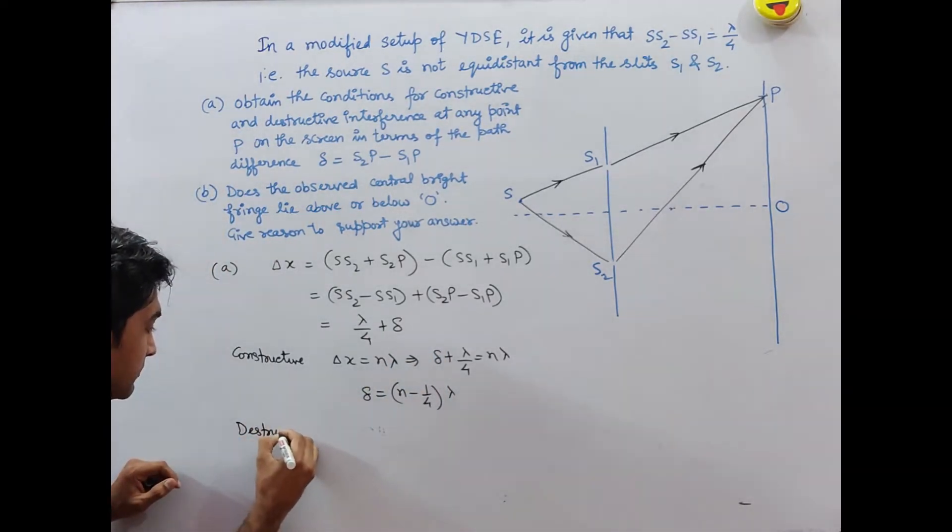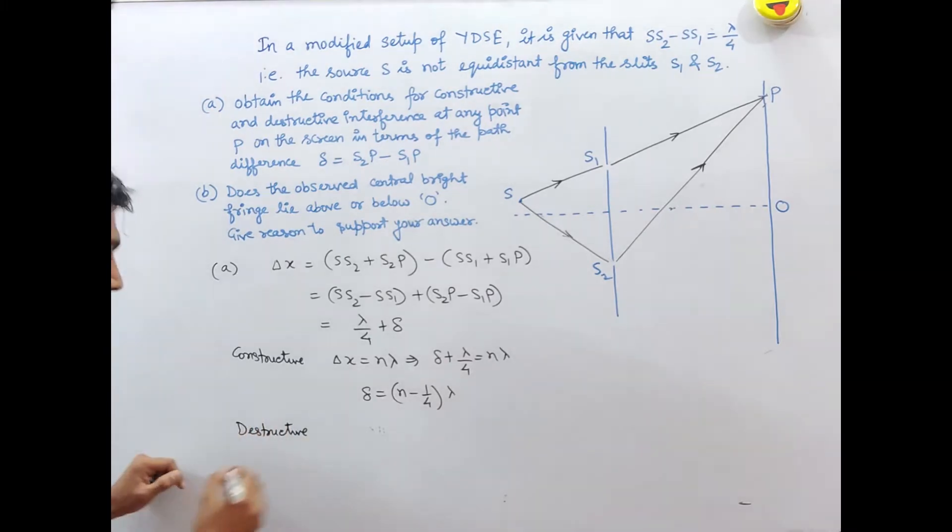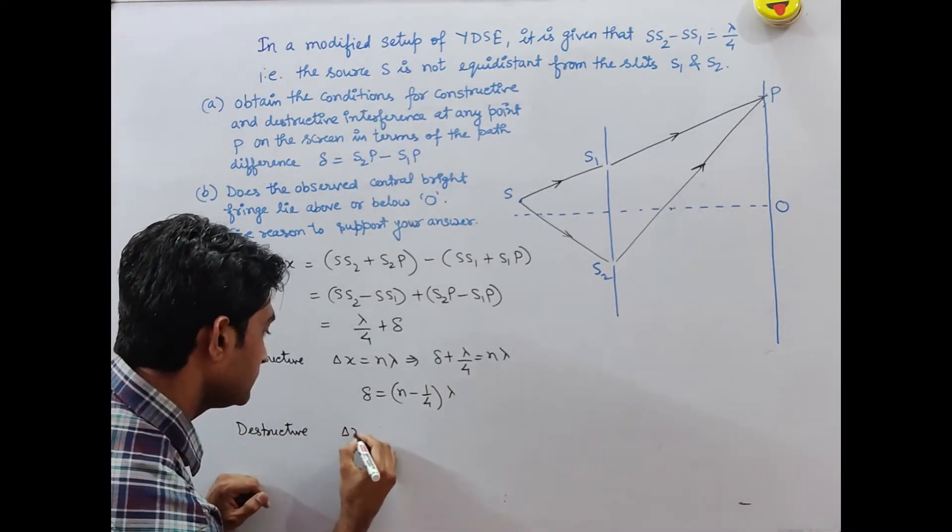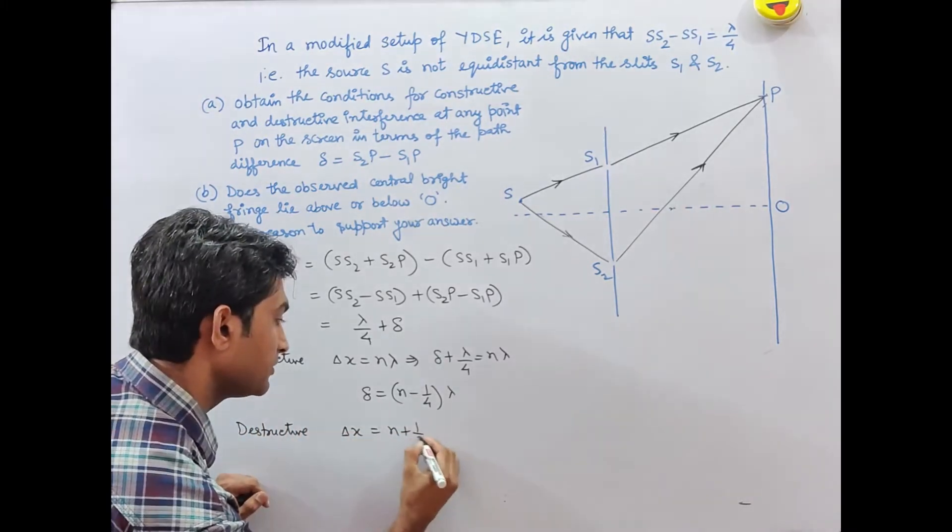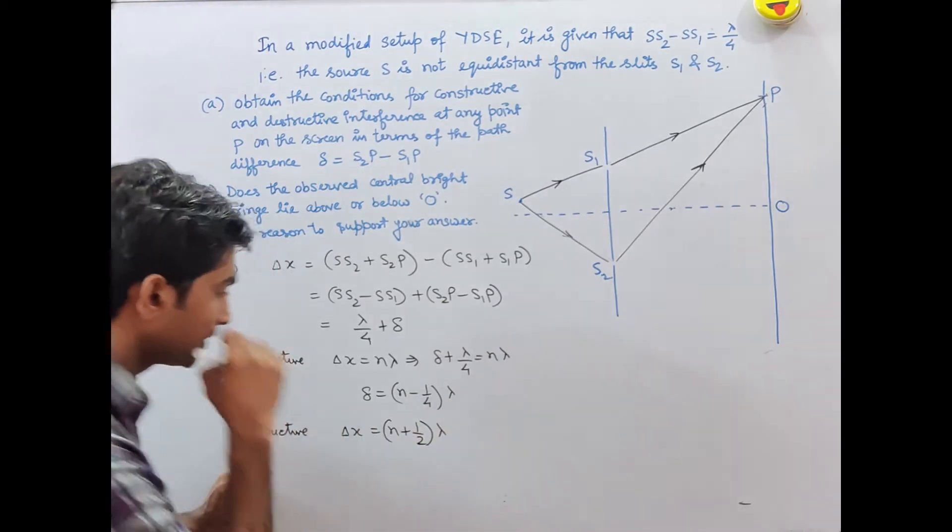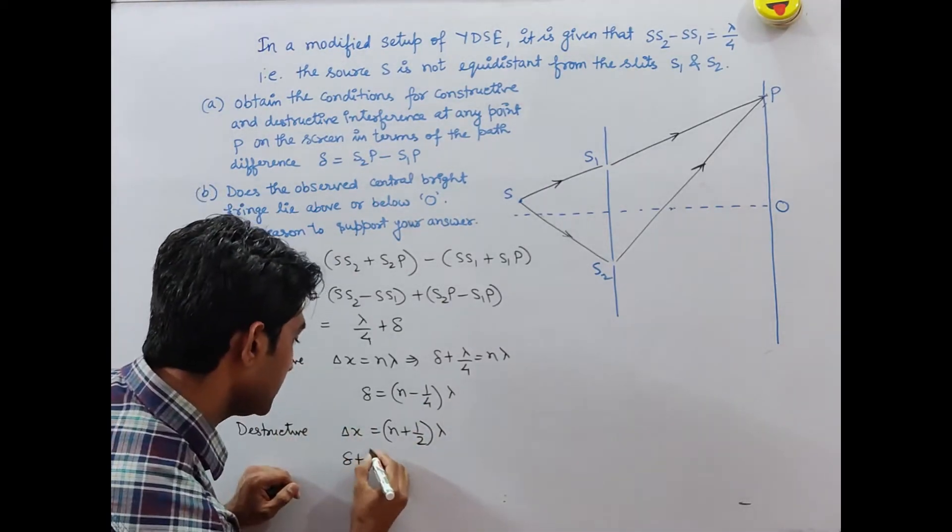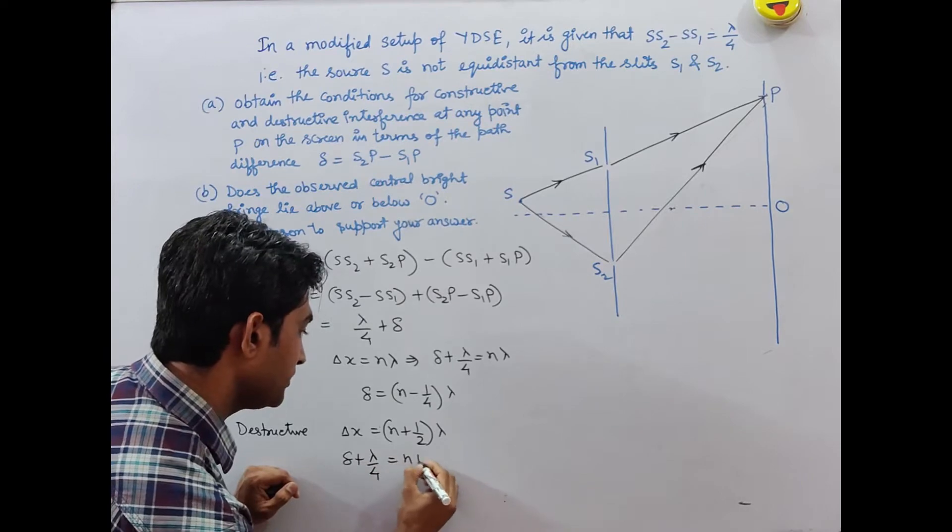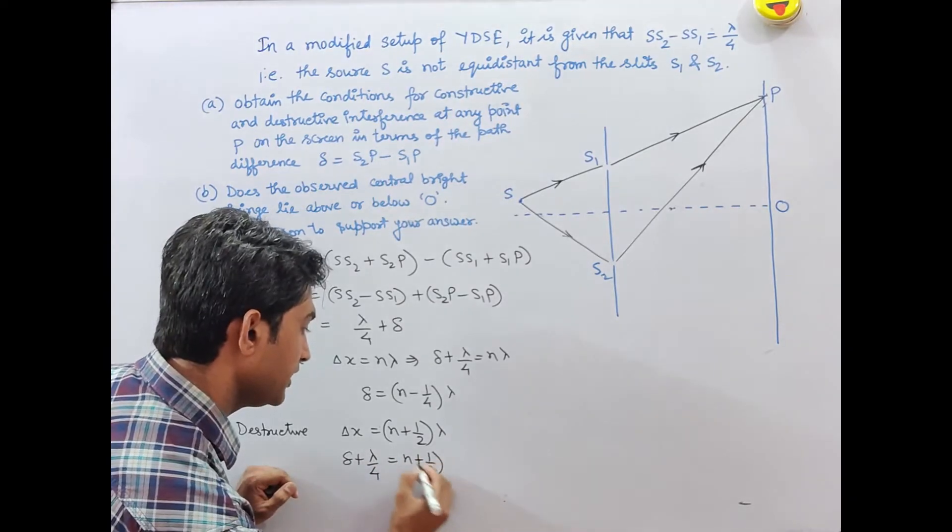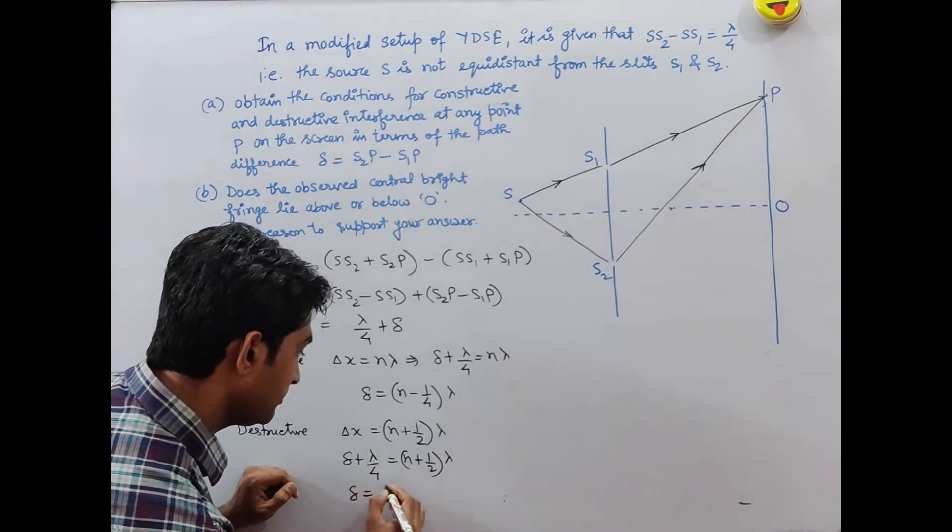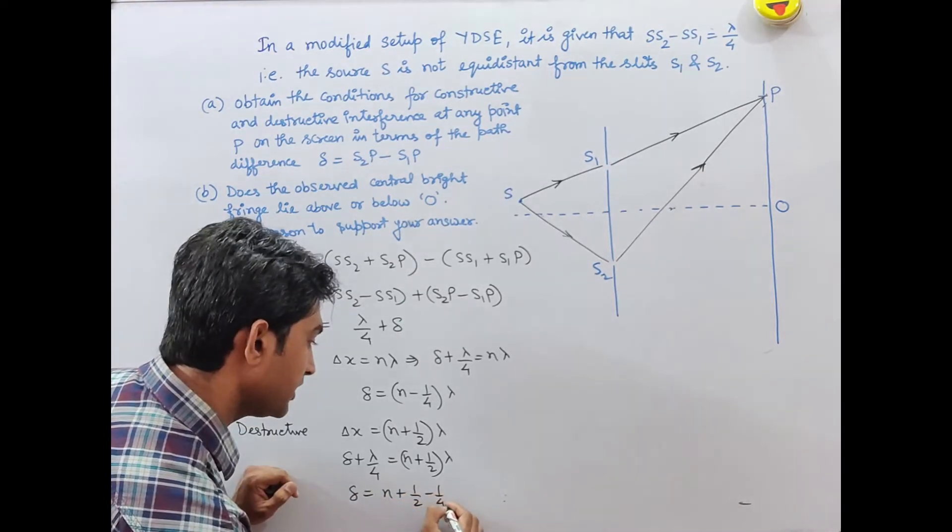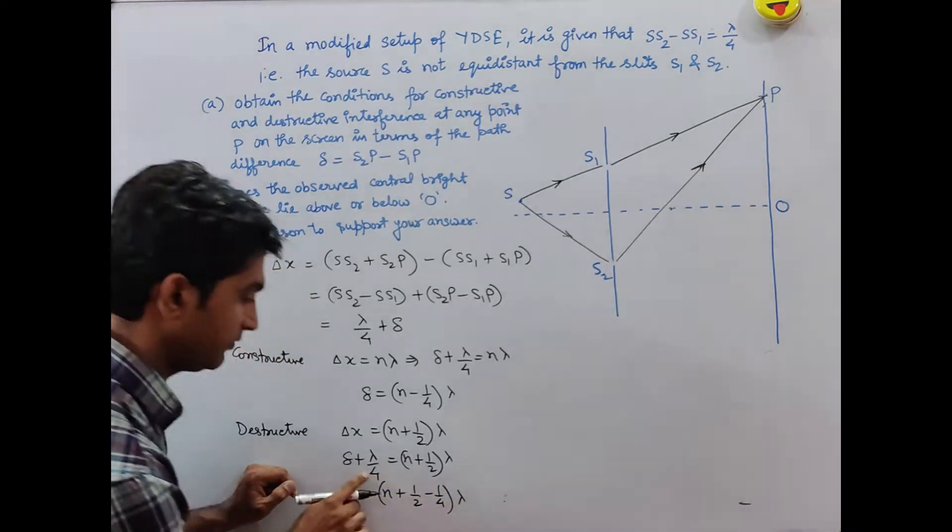For destructive interference, delta X equals (n plus 1/2) lambda. So delta plus lambda by 4 equals (n plus 1/2) lambda. Therefore, delta equals (n plus 1/4) lambda.